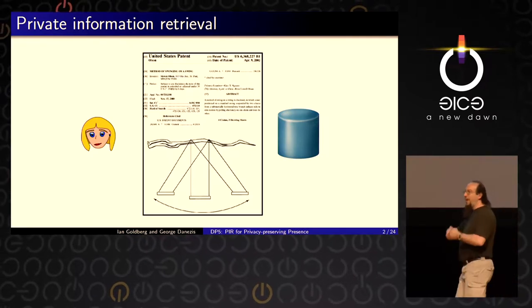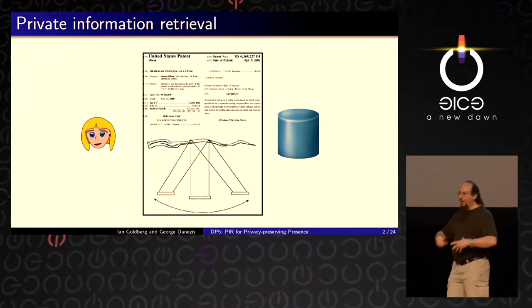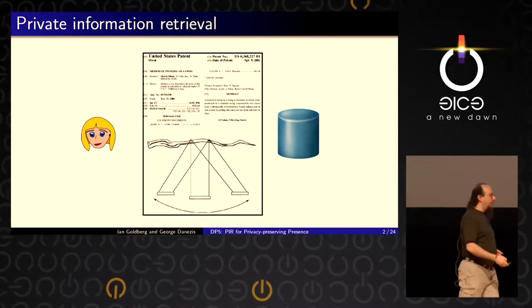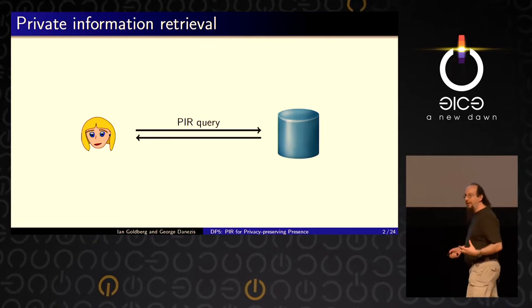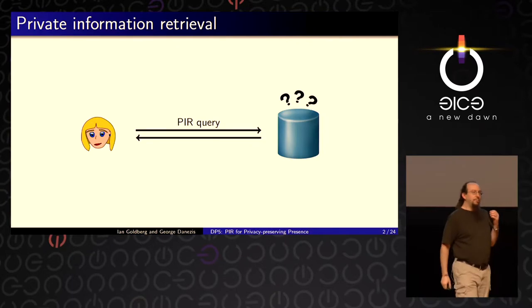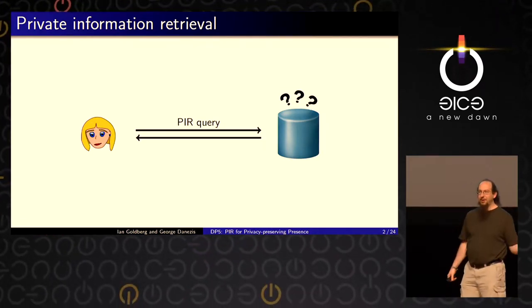Privates Informationsabholen: Wir wollen nicht verstecken, dass Alice sich für Schaukeln interessiert, sondern wir wollen verschleiern, dass Schaukeln ein heißes Thema sind. Wenn man zusätzlich Anonymität hinzufügen möchte, kann man einfach Tor benutzen. Es gibt natürlich auch Business-Modelle, die auf PIR basieren — man zahlt Geld dafür, dass man diese Abfrage privat macht. Alice macht diese PIR-Abfrage, und die Idee ist, dass der Server keine Ahnung hat, was abgefragt wurde.